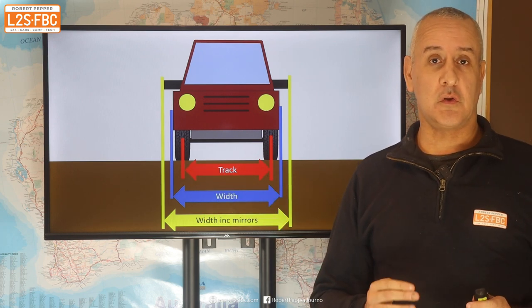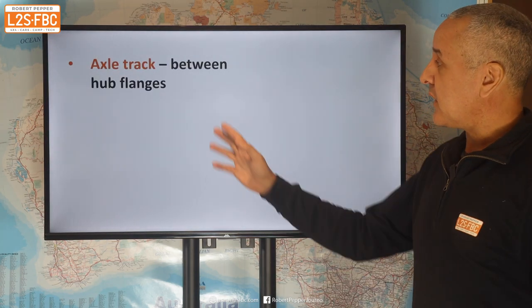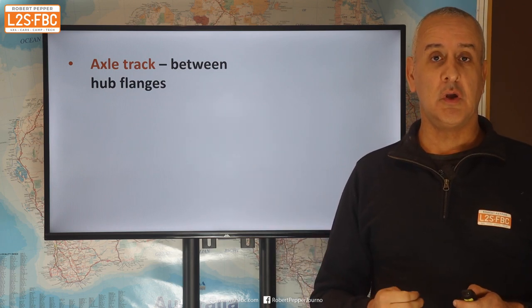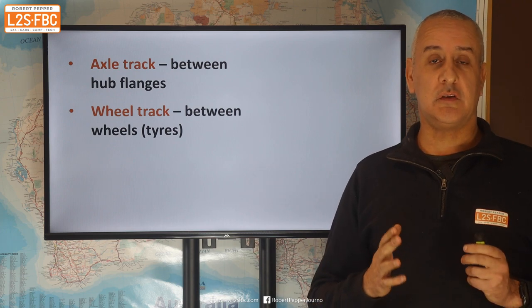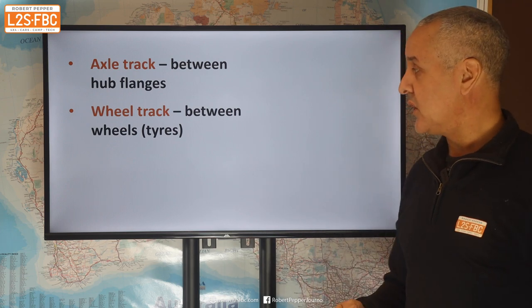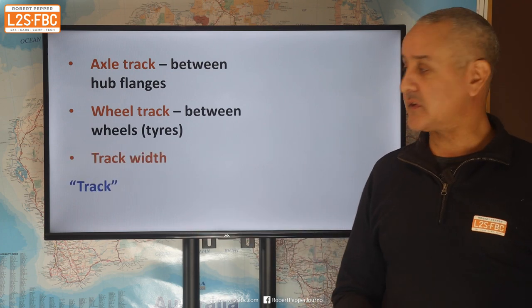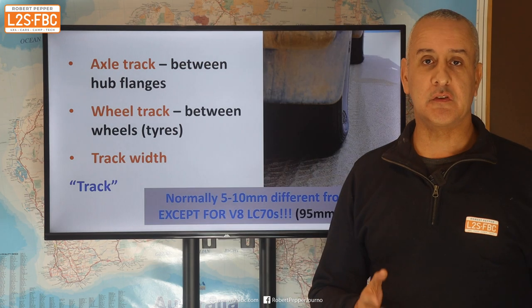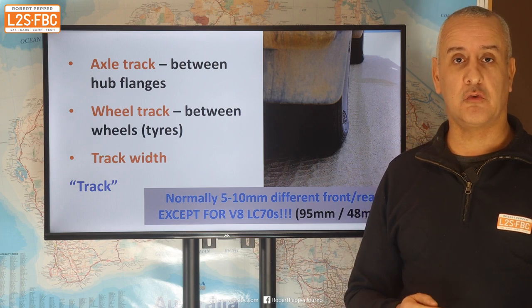So those are your three differences: track, width, and width with mirrors. Now, technically you've got your axle track, which is the width between the two hub flanges. You've got the wheel track, which is the distance between the centre line of the two wheels or tyres, because the tyres are centre-lined on the wheels. It's also known as track width, but generally you'll see it written simply as track. Most four-wheel drives, and many cars for that matter, have a different track front and rear.